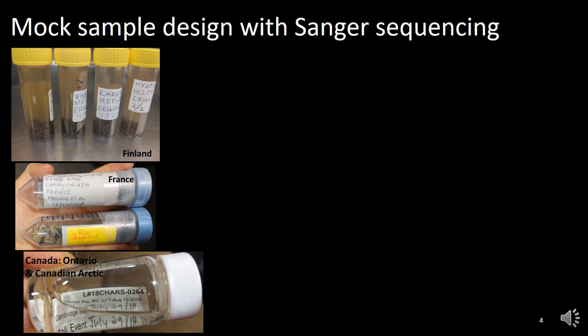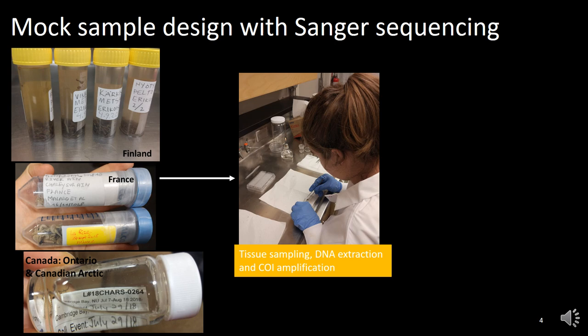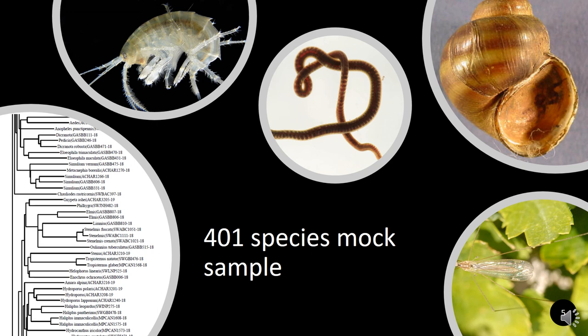Here you can see some of my samples. Overall, they were collected in four different countries — Finland, France, Germany, and Canada — by several collaborators. What we did was get the tissue, subsample it, extract the DNA, and amplify the full-length CO1, which was then Sanger sequenced. After Sanger sequencing, I got all these sequences, and for my mock sample I used 401 of them, each corresponding to individual operational taxonomic units — for the rest of the talk I'll refer to them as individual species.